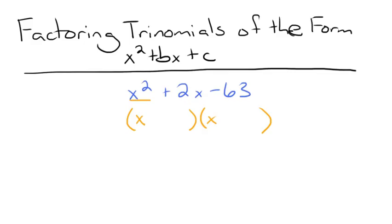Now we need to find two numbers that multiply to negative 63 and add to 2. So let's consider the factors of 63. We have 1 times 63, 3 times 21, and 7 times 9.